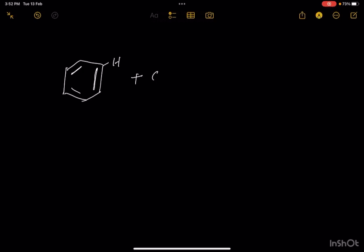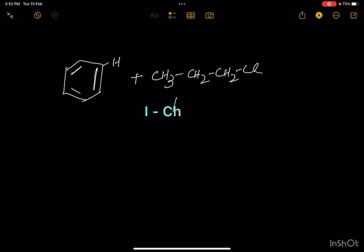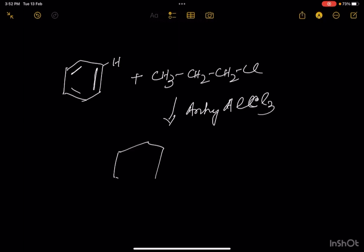This benzene will be treated with 1-chloropropane, CH3-CH2-CH2-Cl, in the presence of anhydrous aluminium chloride. The product will be isopropylbenzene.